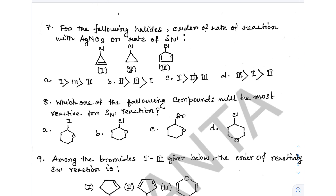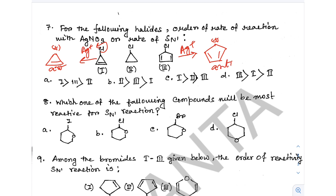Question 7: For the following halides, find the order of rate of reaction with AgNO₃ via SN1. AgNO₃ reacts and Ag⁺ combines with Cl⁻ to form AgCl, stabilizing the carbocation. An aromatic carbocation is stable, an anti-aromatic carbocation is unstable. The stability order is: non-aromatic > anti-aromatic. The correct answer goes from highest to lowest accordingly.